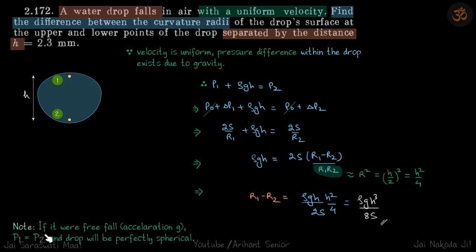Note: if it were free fall, so that means the acceleration of the drop itself is g. In that case, p1 will be equal to p2 and the drop will be perfectly spherical. And of course, that pressure will not be p0. This pressure will be simply p0 plus 2S/r, and r will be h/2. That will be the case when it is free fall.